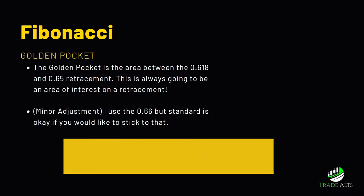The golden pocket — I've made a significant sum of money from trading the golden pocket. I don't take trades blindly from here, although sometimes you might want to because it's a very powerful level. Simply put, the golden pocket is the area between the 0.618 — which is the foundation of Fibonacci — and the 0.65 retracement. That's the range you'll see in the standard Fib retracement tool on TradingView.